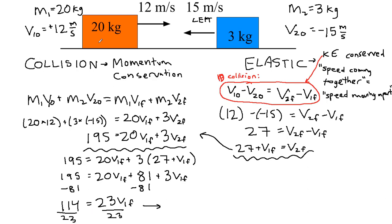And so we get that the original block, the 20 kilogram block that we decided was the mass number one, is going to be moving at the end of the collision at positive 4.96 meters per second, which means that it is still moving to the right. It has just slowed down considerably. It's about 5 meters per second instead of the original 12. So we didn't actually bounce back because it's got so much mass that it just slowed down considerably.